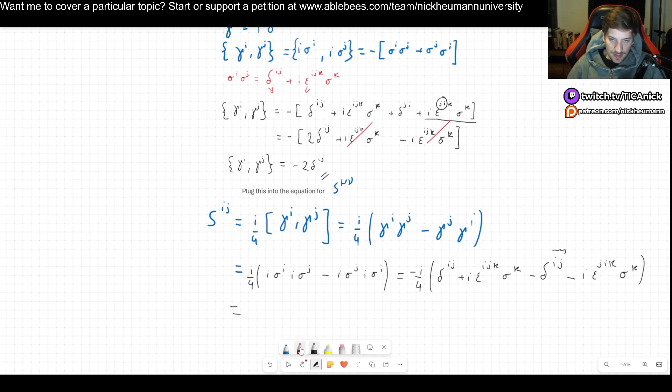This is i sigma^i times i sigma^j minus i sigma^j times i sigma^i. We have a bunch of i's, so they all give us a minus sign, giving an overall -i/4. Then we have sigma^i sigma^j = delta^{ij} + i epsilon^{ijk} sigma^k. From the second term we get -delta^{ij} - i epsilon^{jik} sigma^k. The deltas cancel out and we can flip the epsilon sign. The i's cancel out, and this whole thing turns into a plus. We get 1/2 epsilon^{ijk} sigma^k. So this is our S^{ij}, and as we expected, this is precisely the 2D representation of the rotation group.